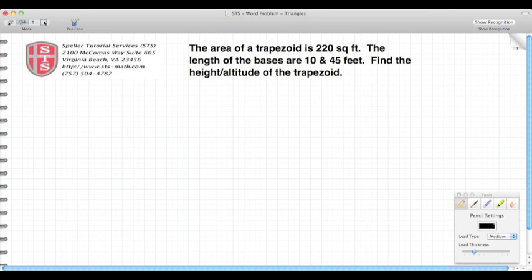Welcome back to Speller Tutorial Services. Today we're going to be working on word problems. The word problem states the area of a trapezoid is 220 square feet, the length of the bases are 10